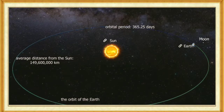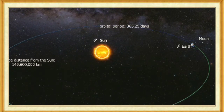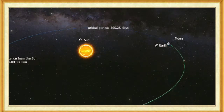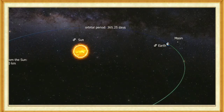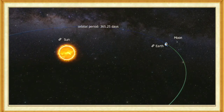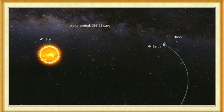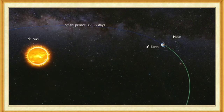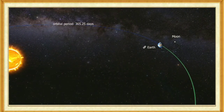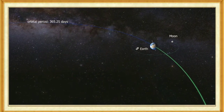The Earth is the third planet from the Sun in the Solar System. While the Earth orbits around the Sun once, it rotates around its axis about 365.25 times. This time period is one year.